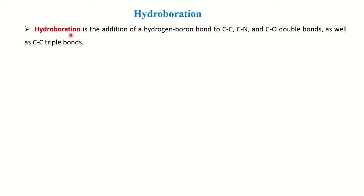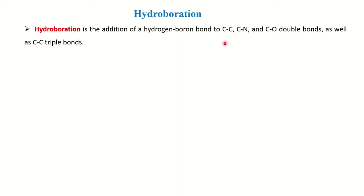What is hydroboration? Hydroboration is the addition of hydrogen and boron to the C=C, C≡N, or C=O unsaturated bond or double bond, as well as the addition of hydrogen and boron on the triple bond. Basically, it is the addition of hydrogen and boron across an unsaturation.